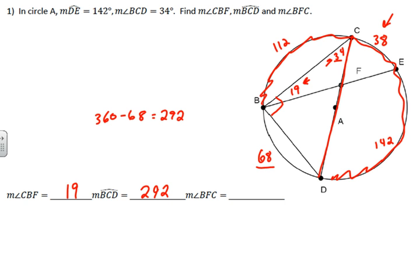So you just subtract away what you don't have. You could have also added 112 plus 38 plus 142, and that would have given you 292.